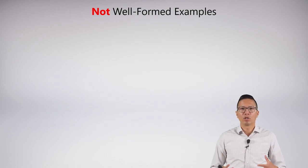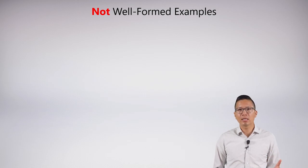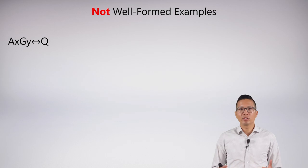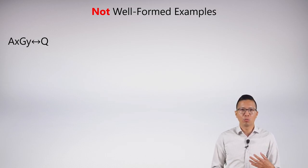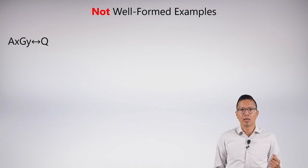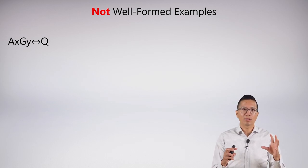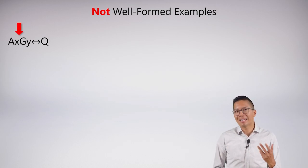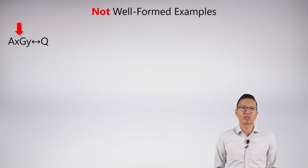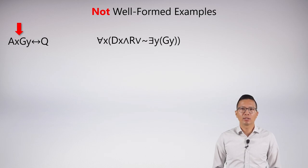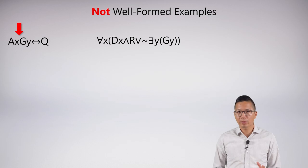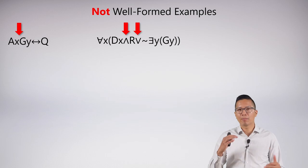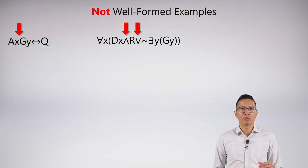The easiest way to make sense of syntax is by looking at bad examples — not well-formed examples and spotting mistakes. Here's a not well-formed statement: AX, GY, biconditional Q. There's nothing wrong with the biconditional Q, but AX GY is problematic. AX is an atomic formula on its own, and GY is as well, but we can't build something with two atomic formulas without something in between — we need a connective like AND or OR to fix this formula. Another example: LX, DX AND R OR negation — there exists a Y bracket GY. There are several problems; the first is that we have AND and OR at the same level, which is ambiguous.